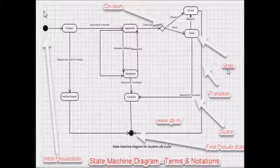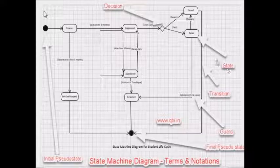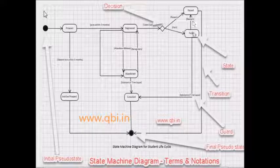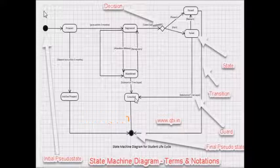Second notation in the state machine diagram is that of a state. For state, you see the notation is that of a rectangle with rounded edges. And you can see in this diagram a student who is failed can either pass by reappearing in the exam